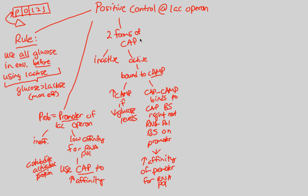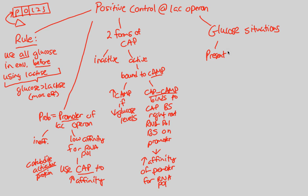The big idea is encompassed in the following last part of this flowchart: glucose situations. Based on this background information, positive control means governing gene regulation at the lac operon based on glucose levels. Glucose is always used before lactose. The promoter region has a natural problem attracting RNA polymerase, which it can combat so long as glucose levels are low, cAMP levels are high, and the CAP-cAMP complex binds next to the RNA polymerase binding site. Glucose can either be present or absent in the E. coli environment.